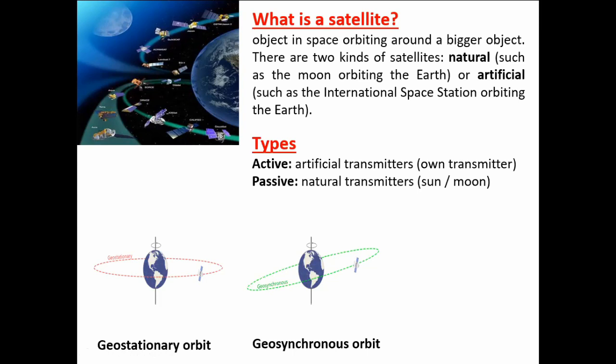The difference between geosynchronous and geostationary is that for geostationary, it picks information at a fixed point all throughout the time — irrespective of time, it's always the same point. But geosynchronous orbiting satellites pick information at a fixed point at a fixed time. We also have polar orbiting satellites, which move in a polar upward form, moving nearer the poles — that's why we term them polar orbiting satellites.